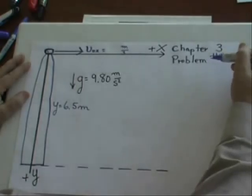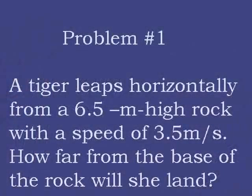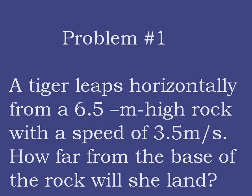Chapter 3, Problem Number 1. A tiger leaps horizontally from a 6.5 meter high rock with a speed of 3.5 meters per second. How far from the base of the rock will she land?